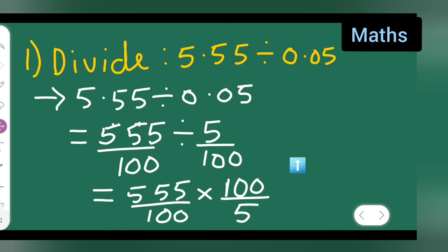100 and 100 will get cancelled. 5 ones are 1, 1, 1 will remain, right? So your answer is 111. 111 is your answer.